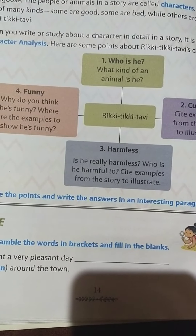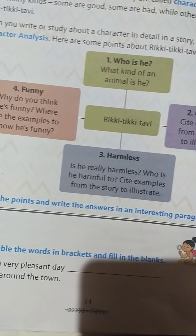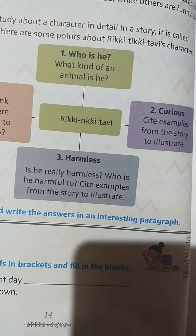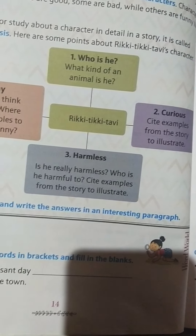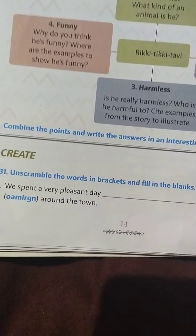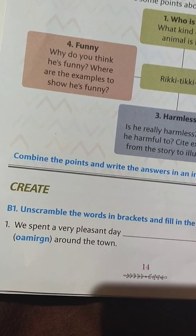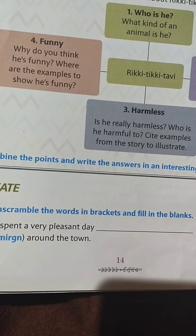So here we have: combine the points and write the answer in an interesting paragraph. You have to combine these points — how he is funny (he burnt his nose), how he is curious (he goes into the big man's lap to see how writing is done, and he goes into Teddy's nursery to see how carousel lamps are lit). Now, unscramble the words in brackets and fill in the blanks. We spent a very pleasant day roaming around the town — the answer is 'roaming'.